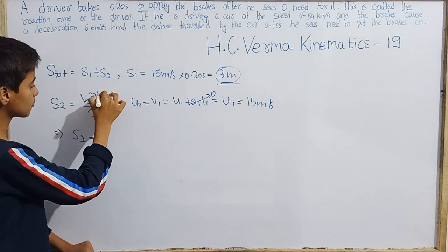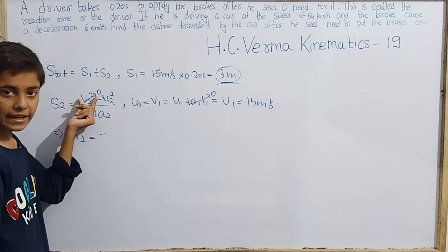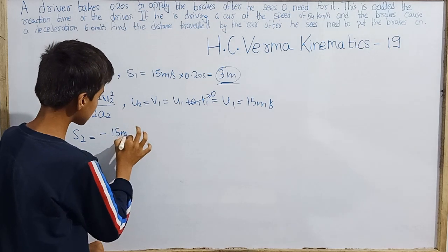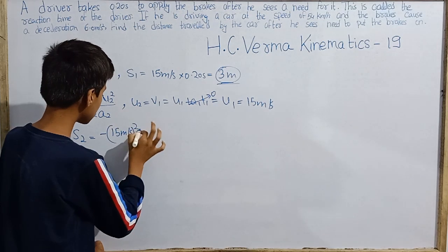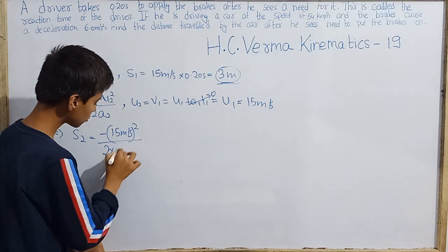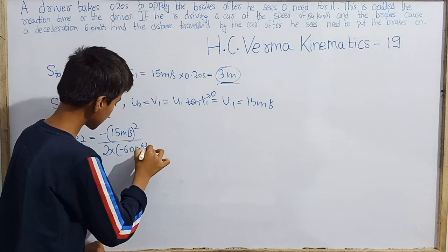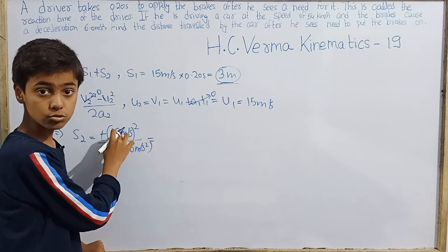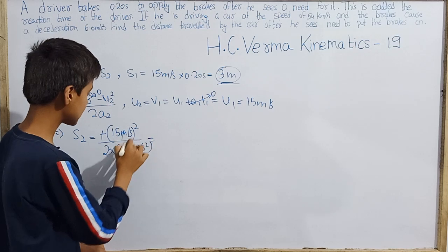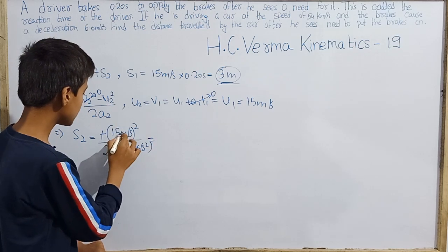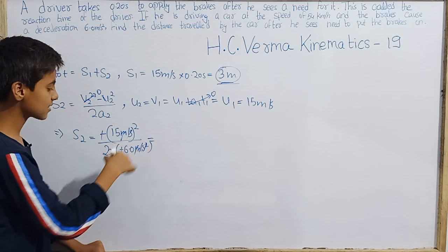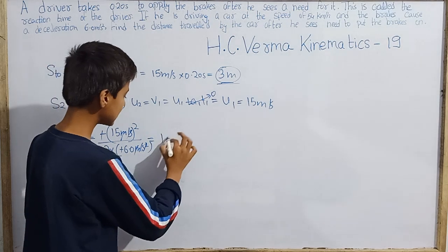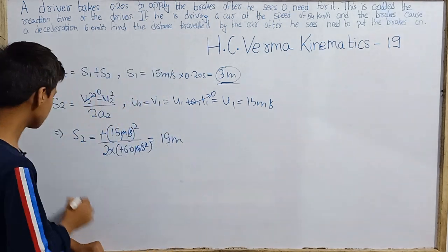The final speed v₂ = 0 since the car comes to rest. So S2 = (0 − (15)²) / (2 × −6.0) = −225 / −12. The negatives cancel, giving 225 / 12, which is approximately 19.0 meters.